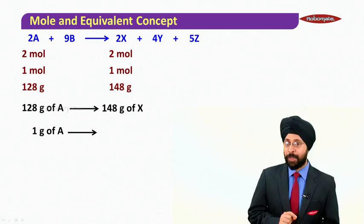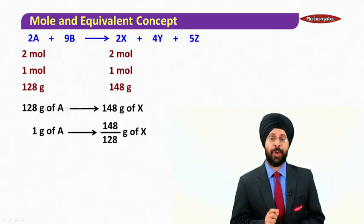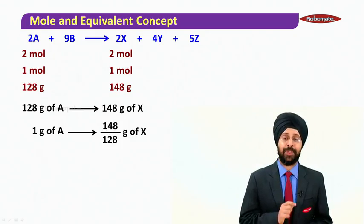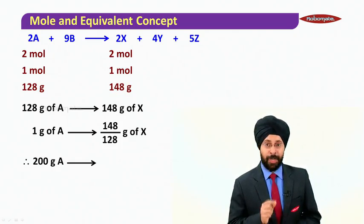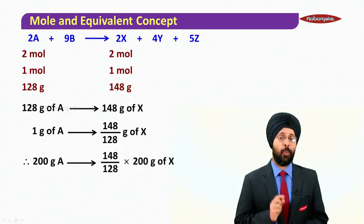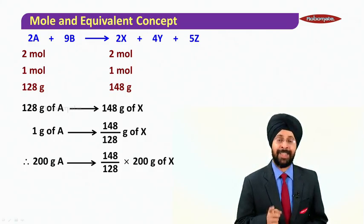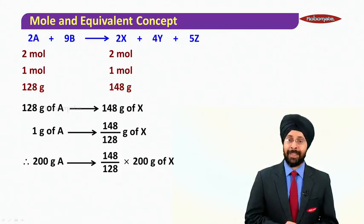And therefore 1 gram of A is going to produce 148 by 128 grams of X. Assuming 100% yield, 200 grams of A is going to produce 148 by 128 times 200 grams of X.